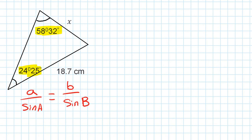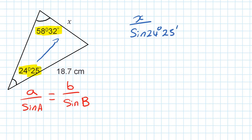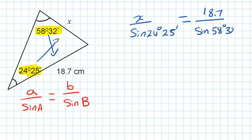First, identify the opposite side and angle. This 24 degrees 25 minutes is opposite to x. So we write: x over sine of 24 degrees 25 minutes is equal to — the opposite of this angle is 18.5 — so 18.7 over sine of 58 degrees 32 minutes.